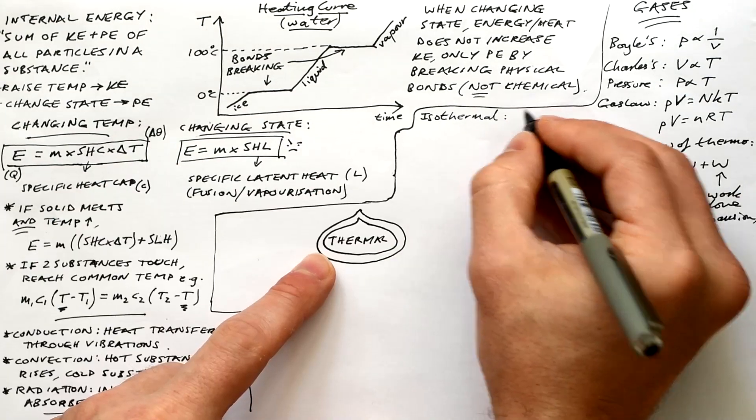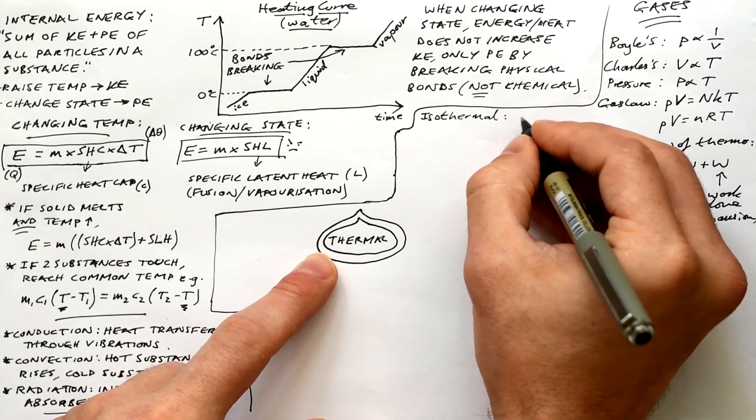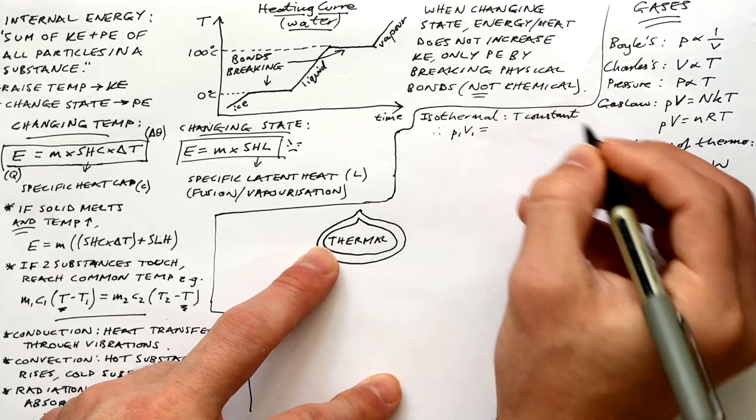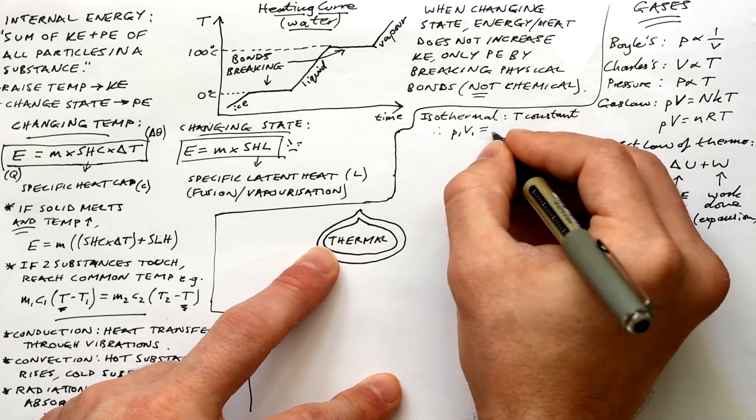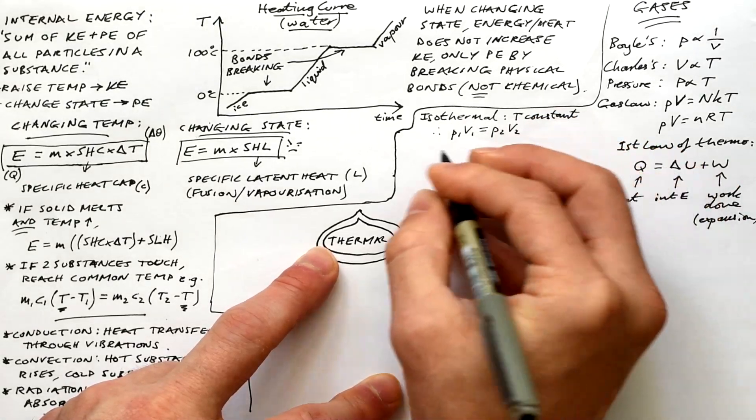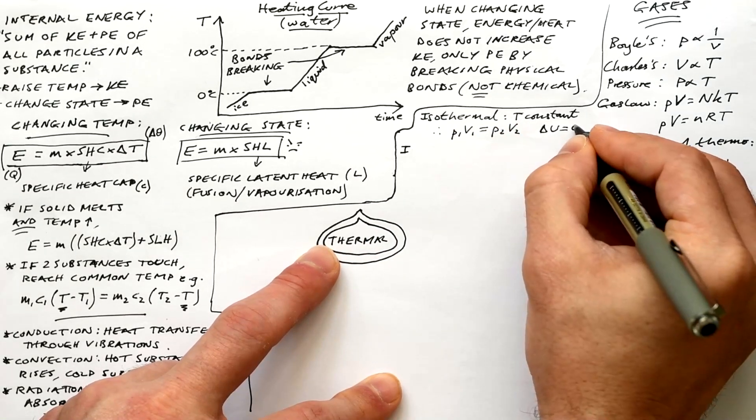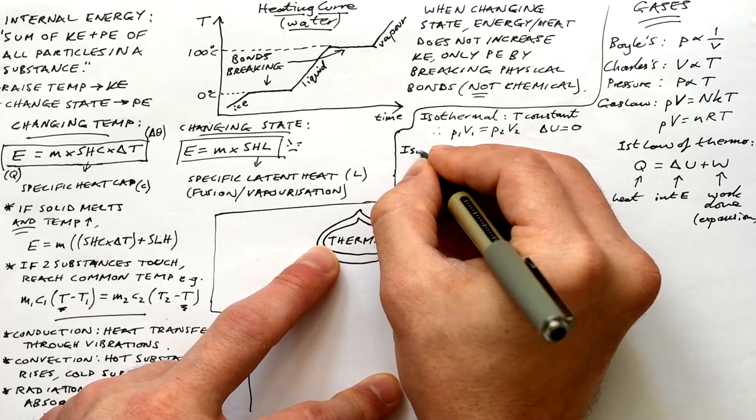There are four main types of processes that a gas can undergo. Isothermal, that's when temperature is constant. So that means NRT and NKT constant. So that means that PV is constant as well. So PV is the same at the start and at the end. So P1V1 equals P2V2. And if the temperature stays the same, then delta U is equal to zero.